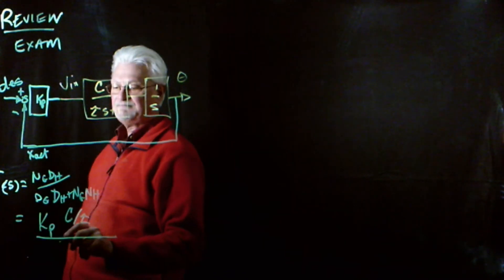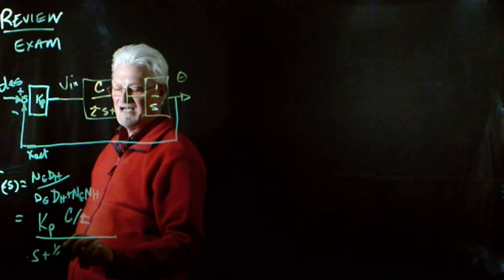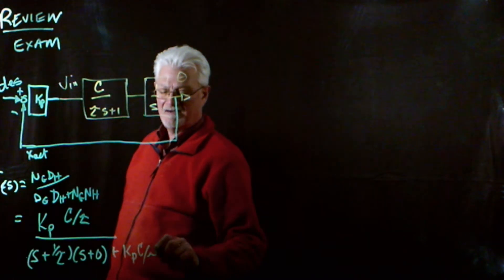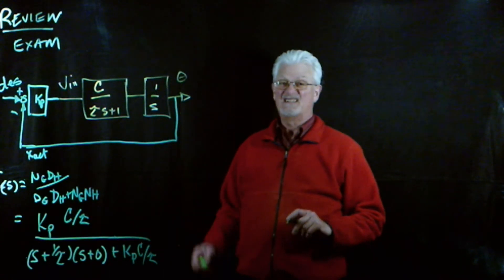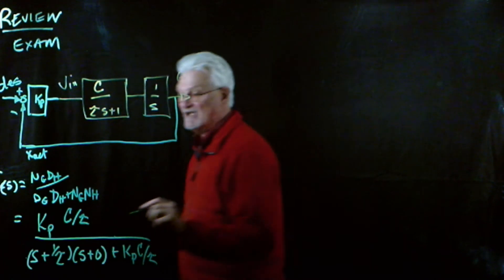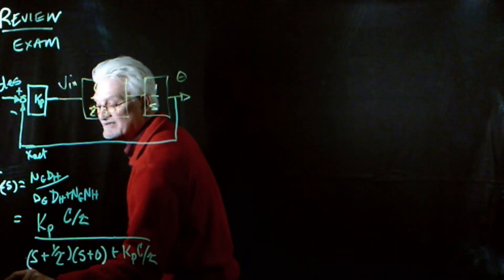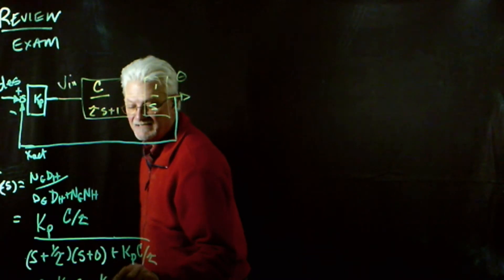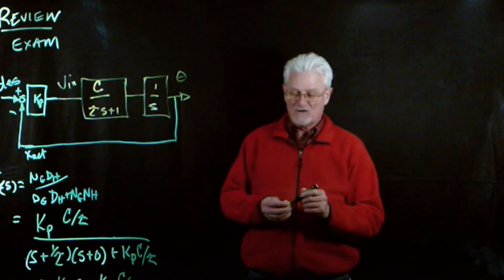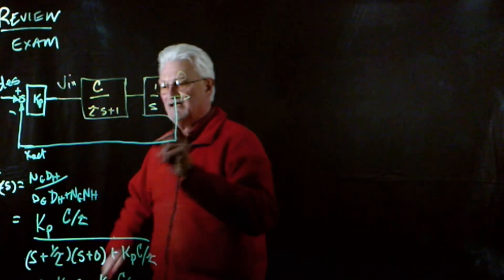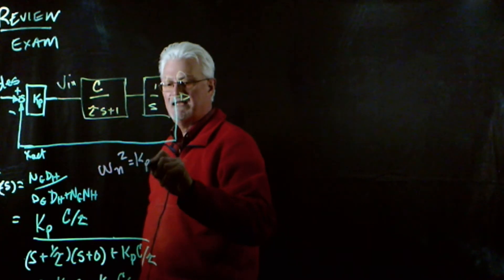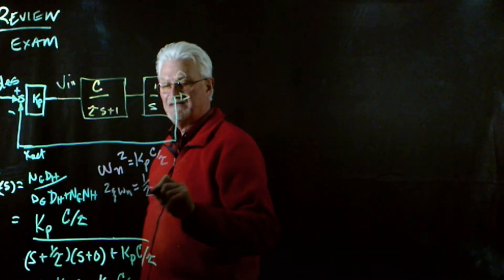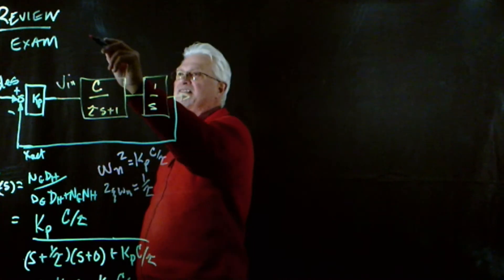In this particular case that's going to be Kp times C over tau divided by the denominator of G, which is s plus one over tau times s plus zero, plus Kp C over tau. I've done a little algebra to get this in canonical form. The characteristic equation on the denominator is s squared plus one over tau times s plus Kp C over tau. So omega_n squared equals Kp times C over tau, and 2 zeta omega_n equals one over tau.